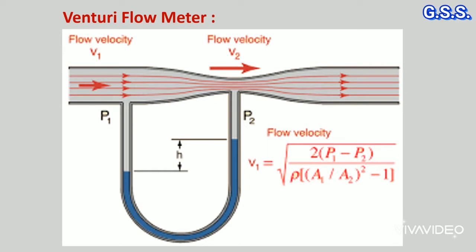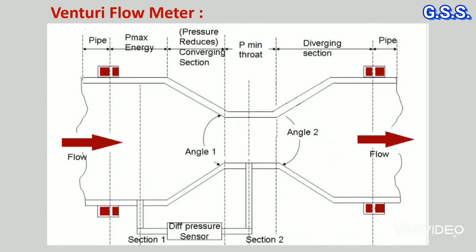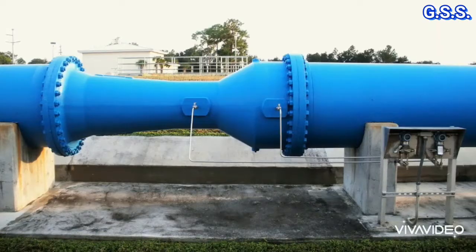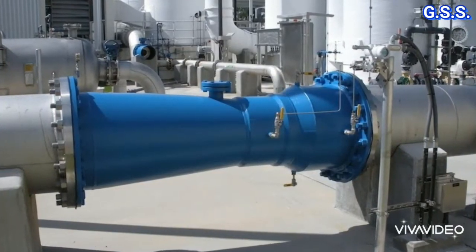The advantage of venturi flow meter is about 90% of pressure drop is recovered in the diverging section, which is not possible in orifice flow meter. This is an installation of venturi flow meter.